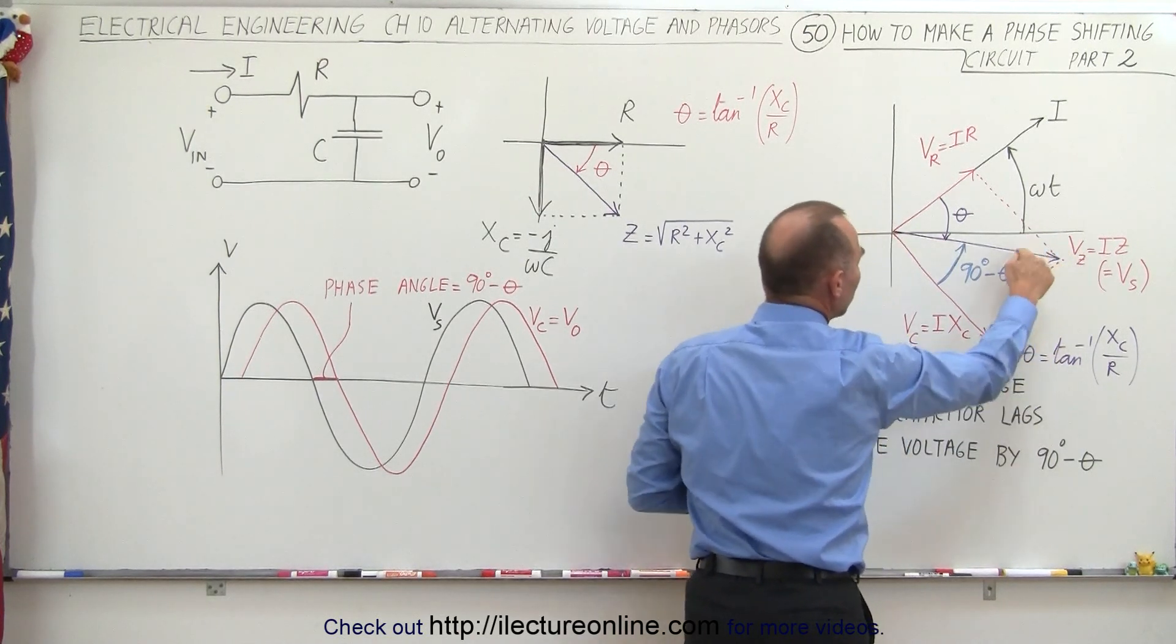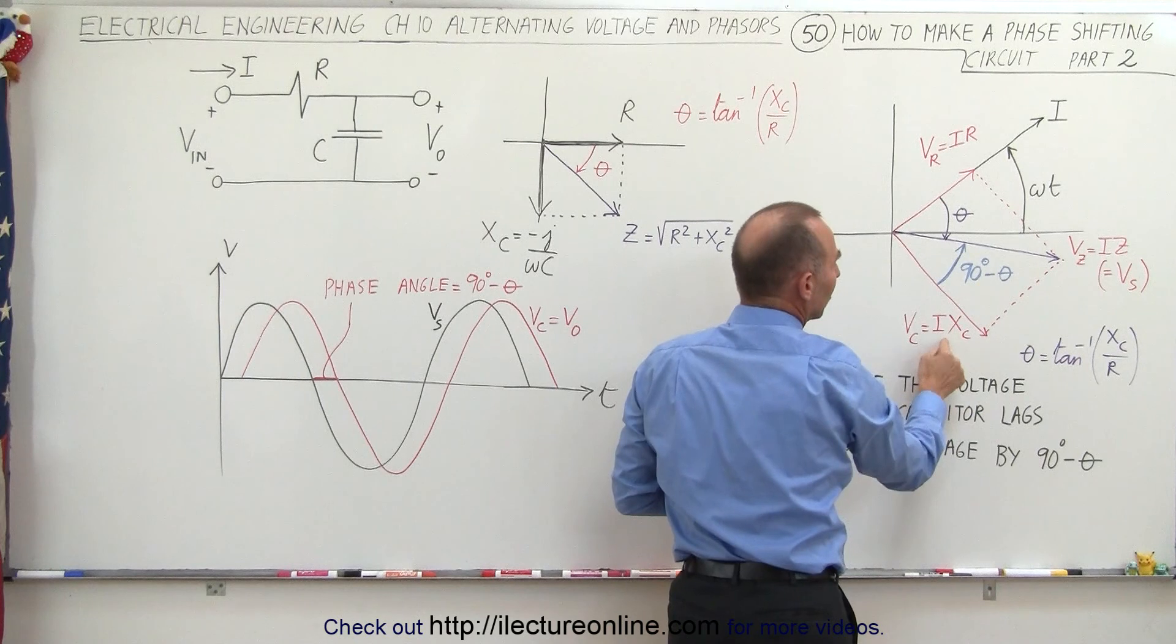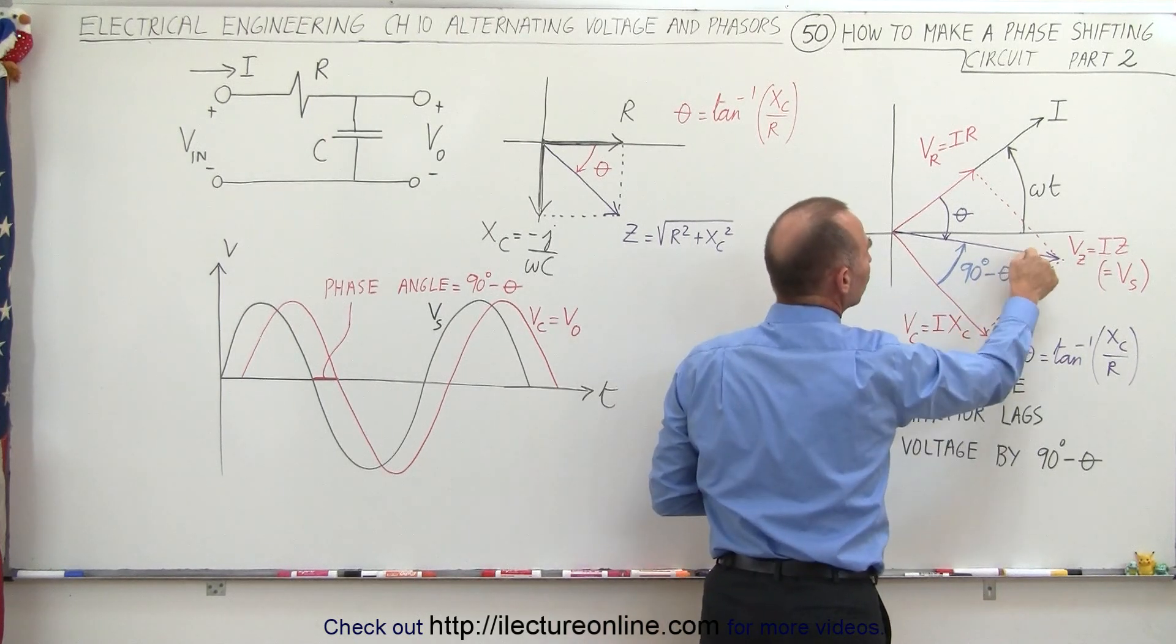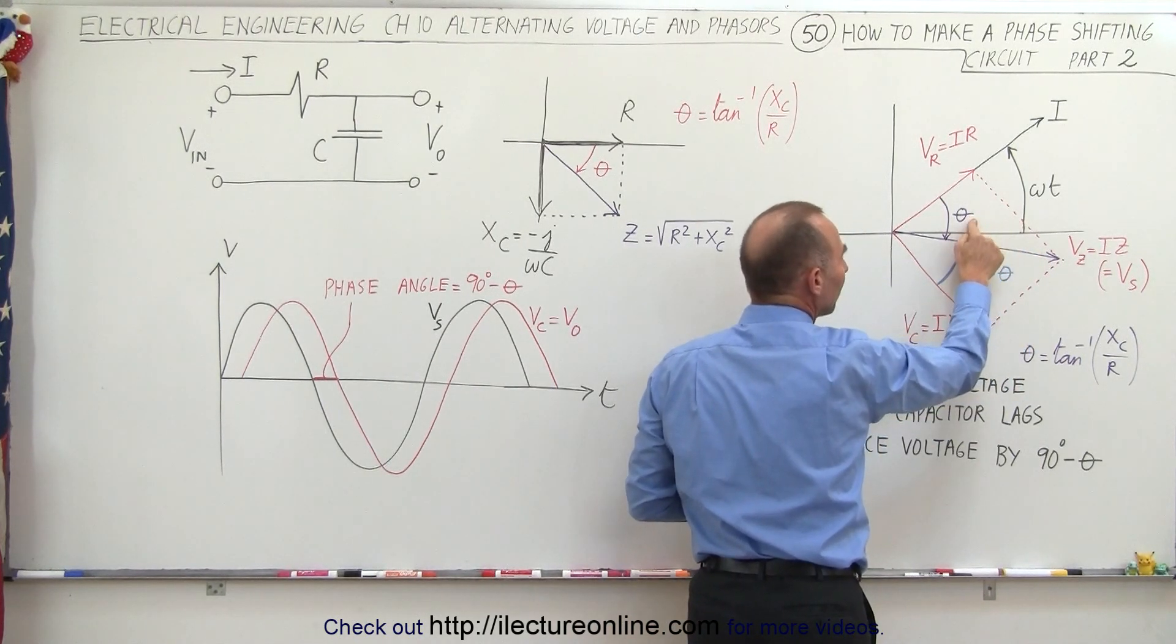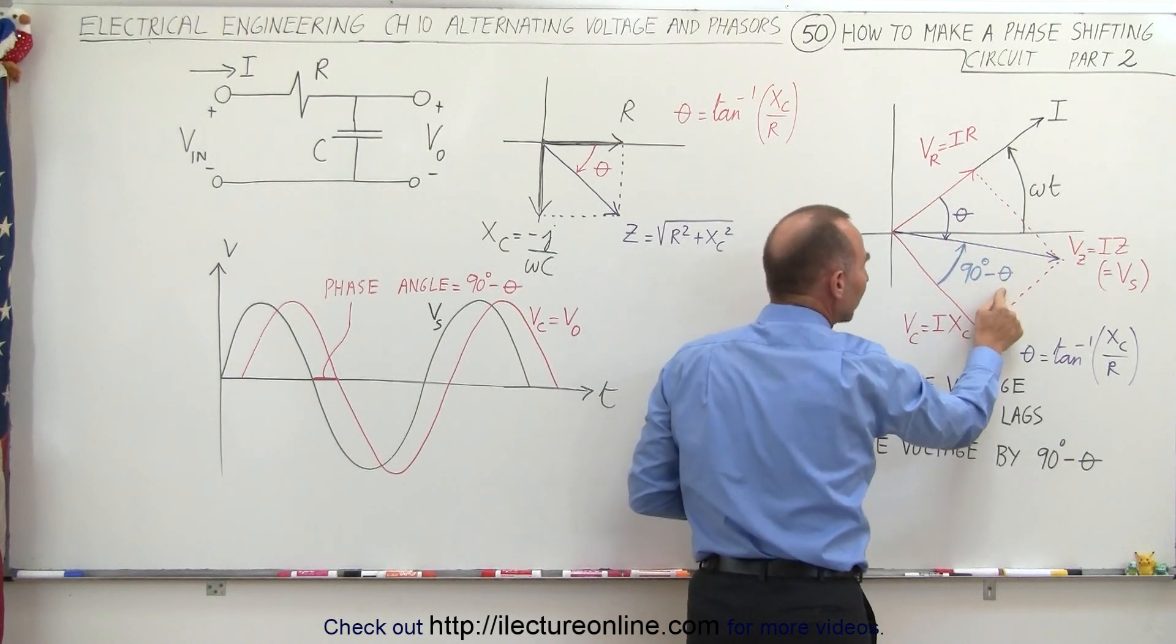Now in relationship, you can see here that the voltage across the capacitor lags the voltage across the source, not by the angle theta, but by the angle 90 degrees minus theta.